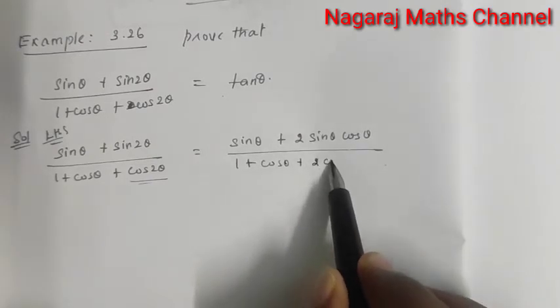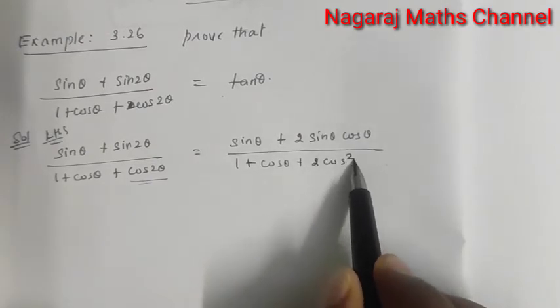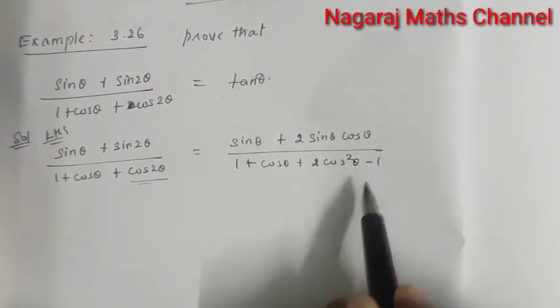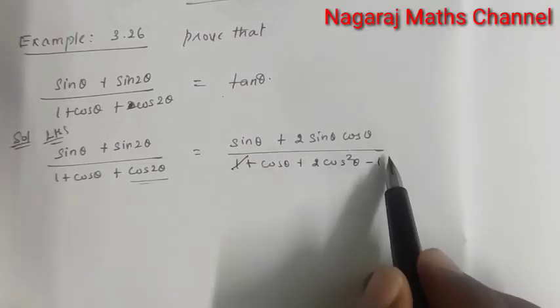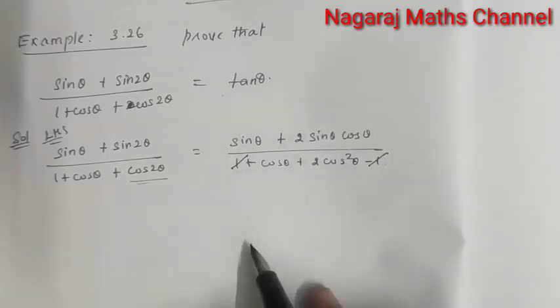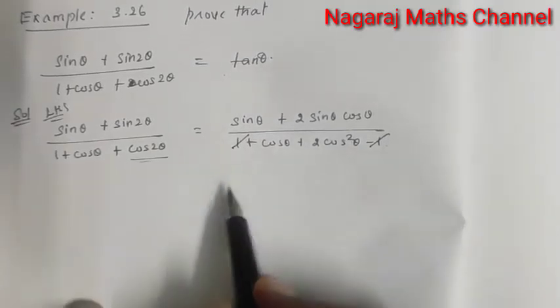In the denominator, cos 2θ expands as 2cos²θ minus 1. So we have plus 2cos²θ minus 1, and the +1 and −1 cancel out.